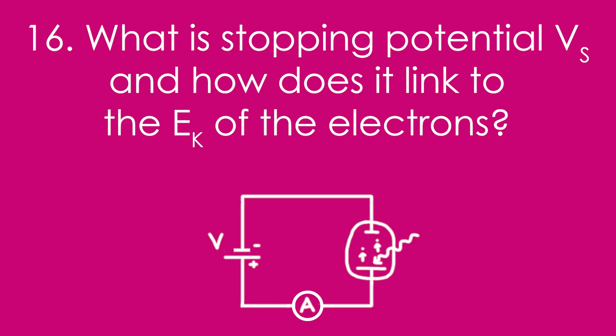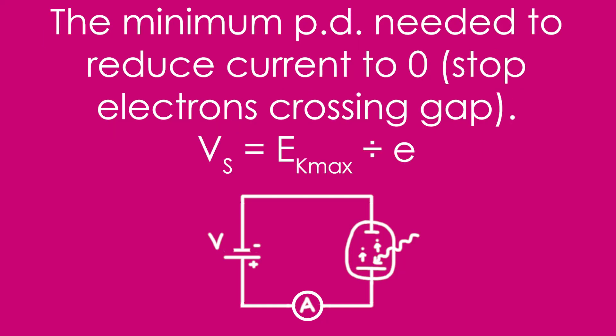Sixteen, in this circuit here, what is stopping potential Vs, and how does it link to the kinetic energy of the electrons? Stopping potential is the minimum PD needed to reduce the current in the circuit to zero. That's when we know we've stopped the electrons crossing the gap.